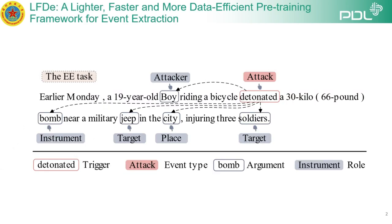To simplify, event extraction is about finding and understanding events within unstructured text. An event includes a trigger like the word 'detonated' and various arguments like boy, bomb, jeep, city, and soldiers in the sentence. The goal is to identify these components and understand their roles within the event.